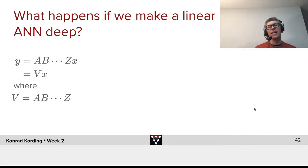So, what happens if we make a linear artificial neural network deep? We could say Y, in this case, is A times B times C and so on up to Z times X.